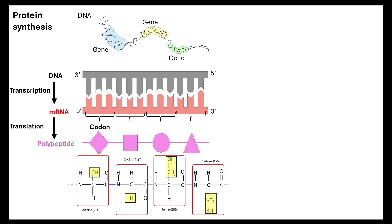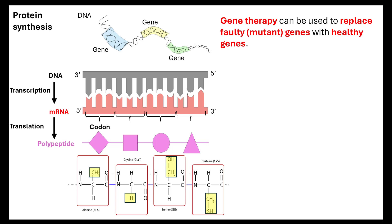A different version of a gene is an allele. Gene therapy is where we're going to replace a faulty mutant gene with a healthy allele — a healthy gene. We're going to take the gene which codes for the non-functional protein and replace it with a gene that codes for the functional protein.